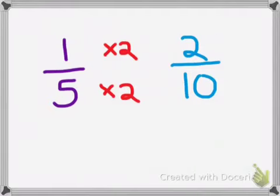The reason that this works is because I'm multiplying the top number, the numerator and the denominator by the same number. That's how I know that these two are equivalent fractions.